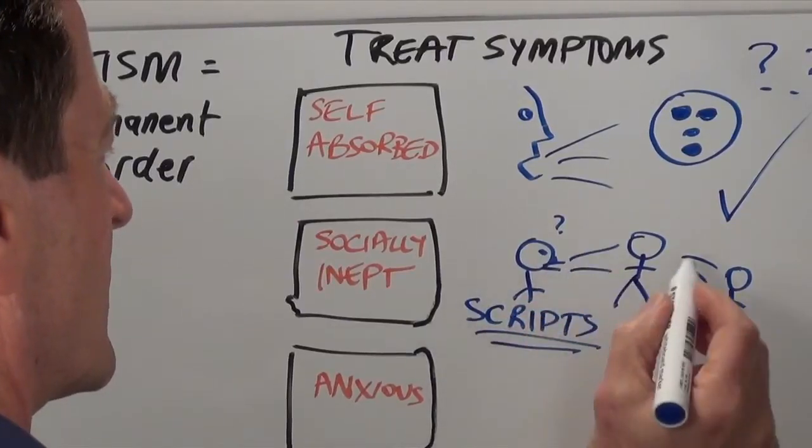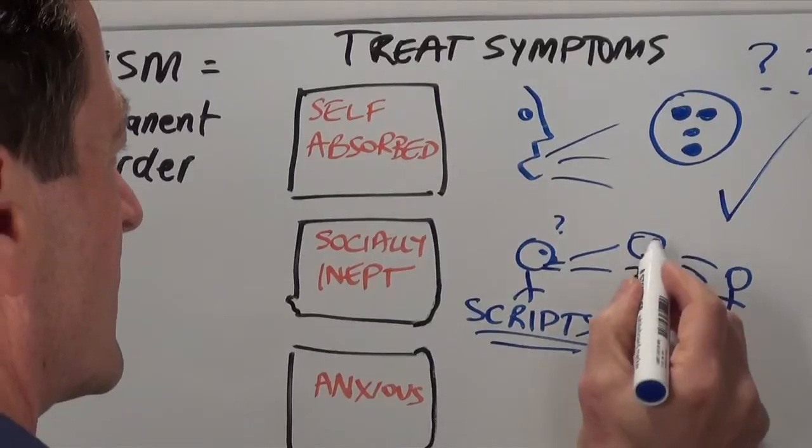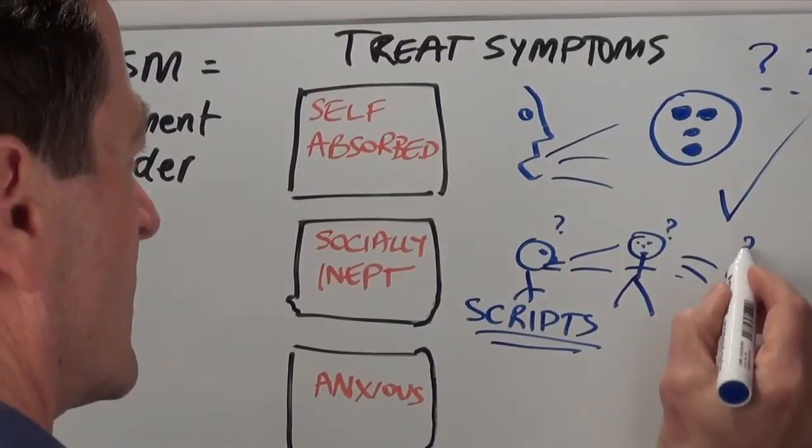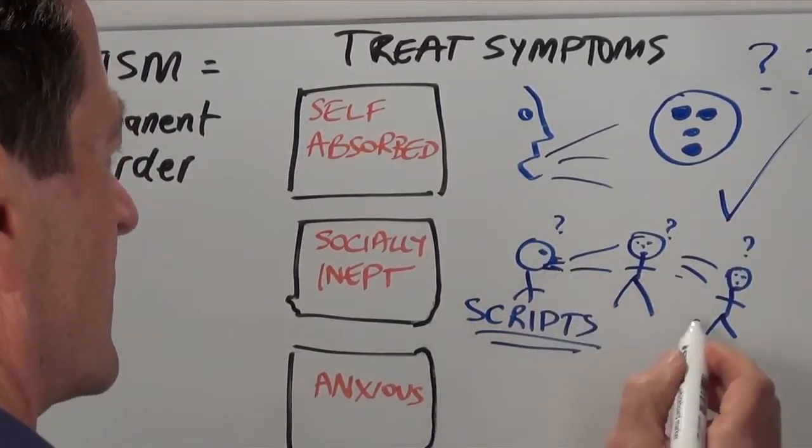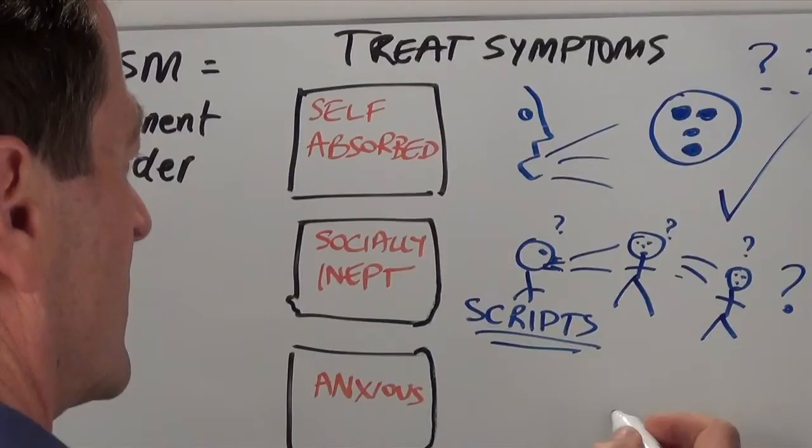But this symptom managing approach does not give your child any further understanding of what social interaction is really all about. And since the scripts can't adapt to the fluid nature of social interaction, your child will stand out whenever he or she uses them. Far better if your child can learn what social interaction really is all about, what interaction is meant to achieve. But you won't get that awareness through Therapy One's symptom treating approach.